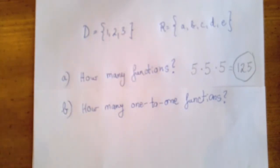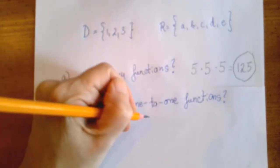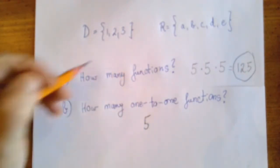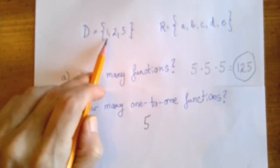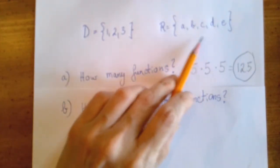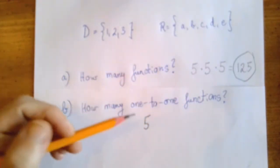What that means is, after we made our choice for what we're going to assign to the number one in the domain, when we move on to two, we no longer have all five options. We don't know what was selected to be assigned to one, but whatever that letter is, we can no longer use it because the function is one-to-one.